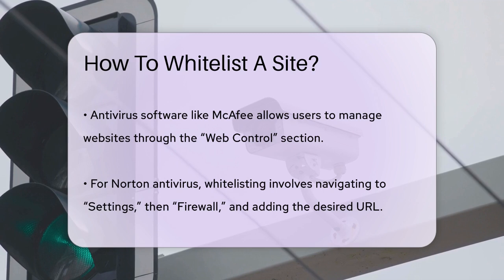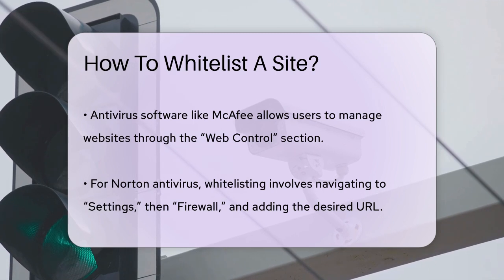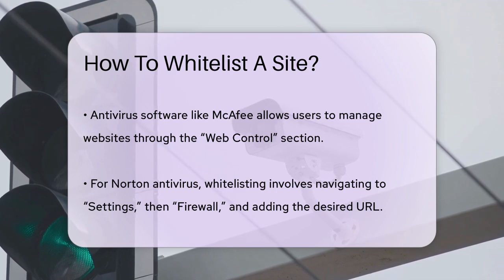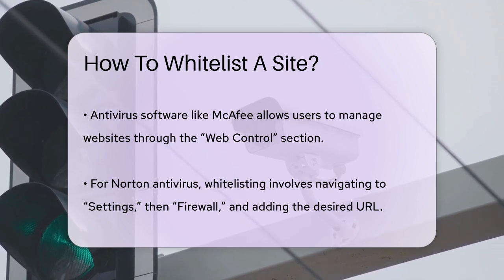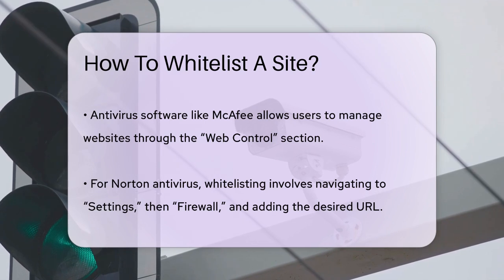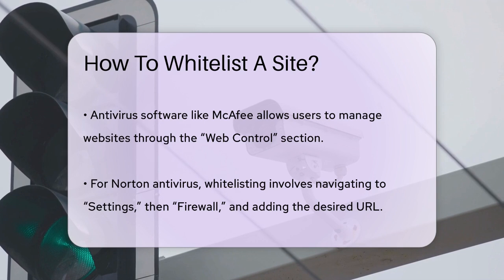When it comes to network settings, such as on your router or firewall, the process can vary depending on the manufacturer. Generally, you'll need to access the router or firewall's configuration interface, usually via a web browser or dedicated software, and locate the content filtering or website blocking settings. Here you can add the URLs or domains of the websites you want to whitelist.